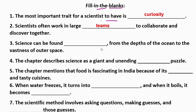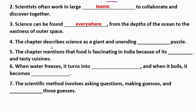Question 3: Science can be found __ from the depth of the ocean to the vastness of outer space. The answer is everywhere. Question 4: The chapter describes science as a giant and unending __ puzzle. The answer is jigsaw puzzle.